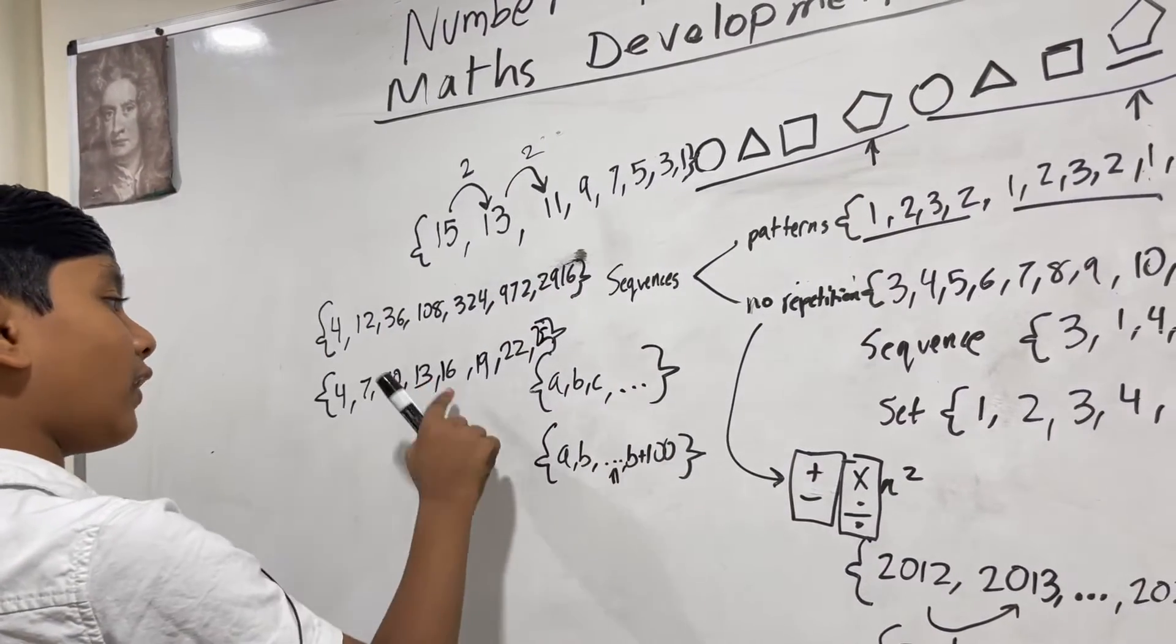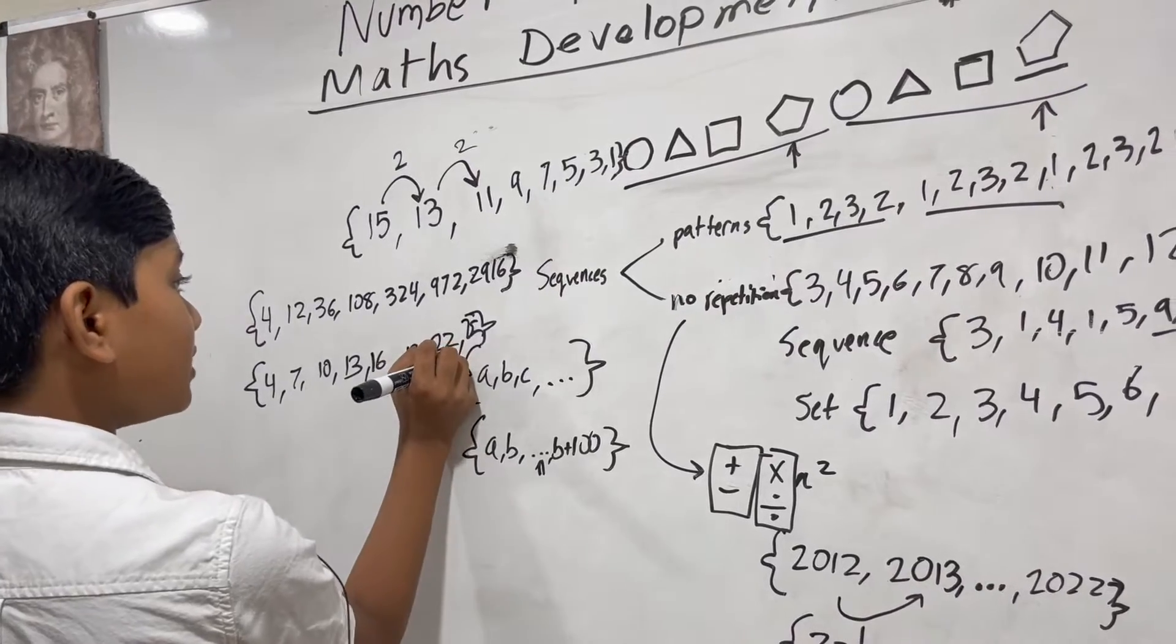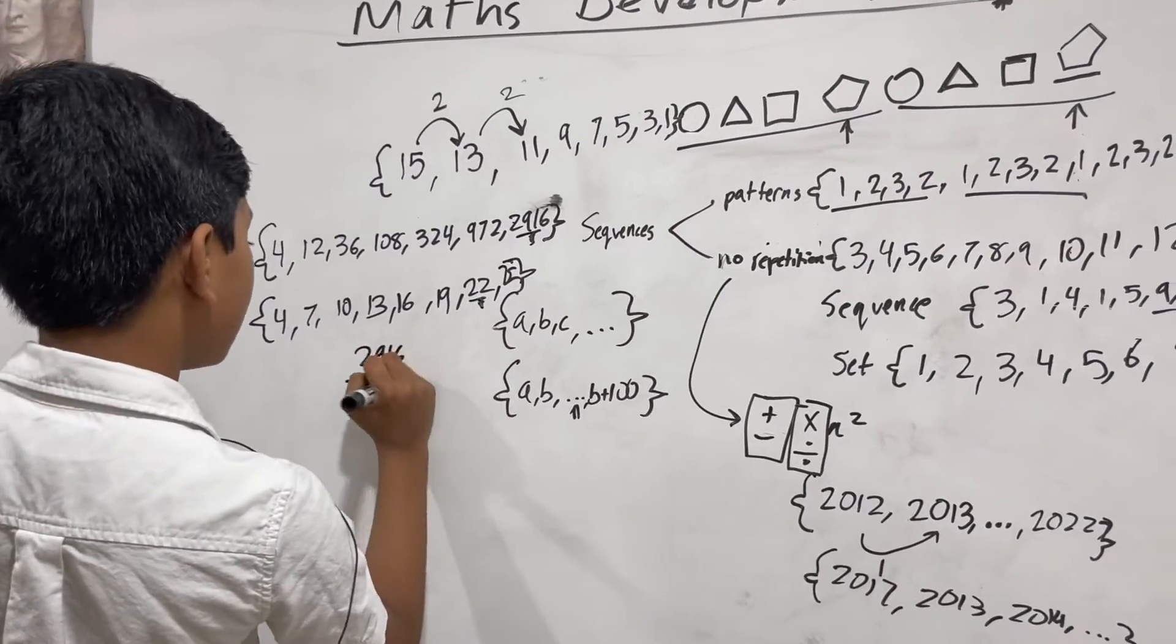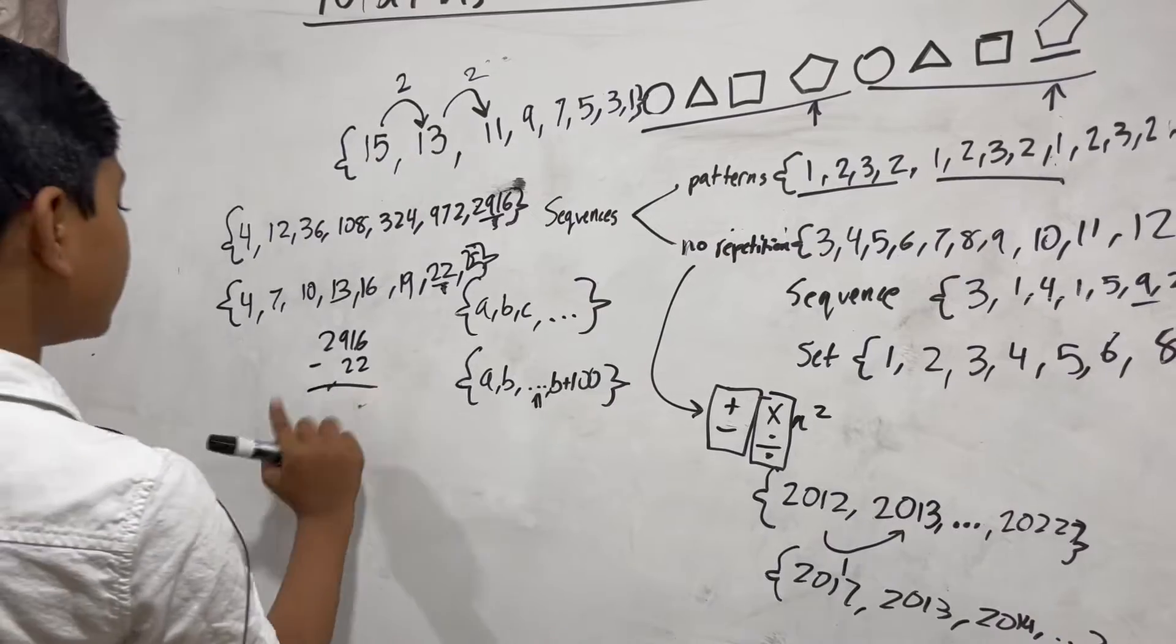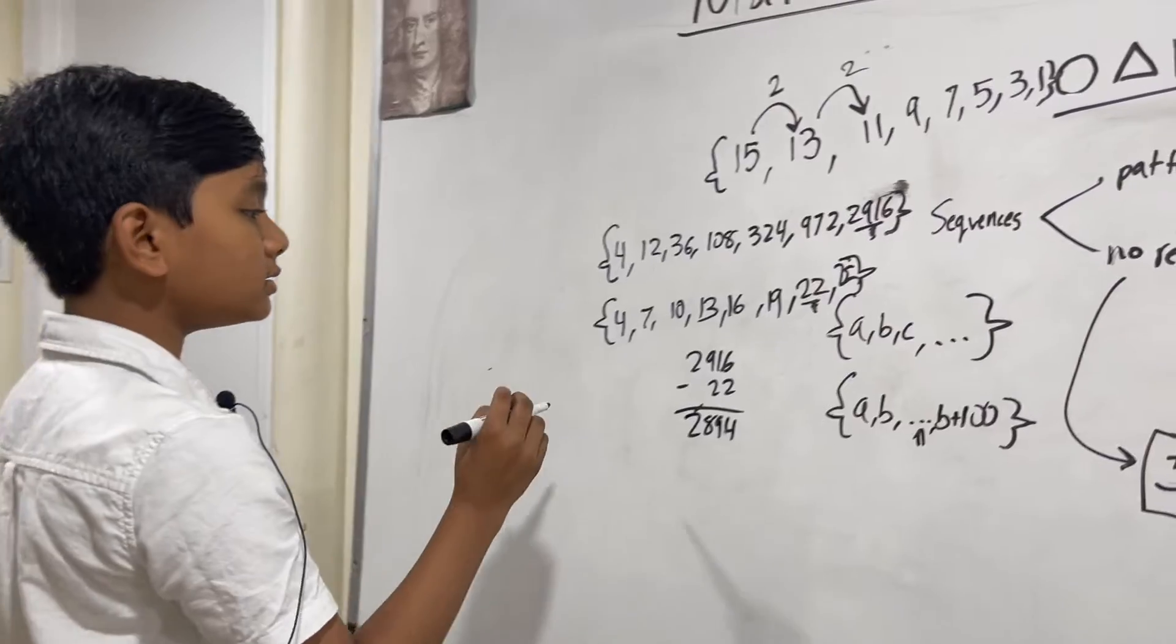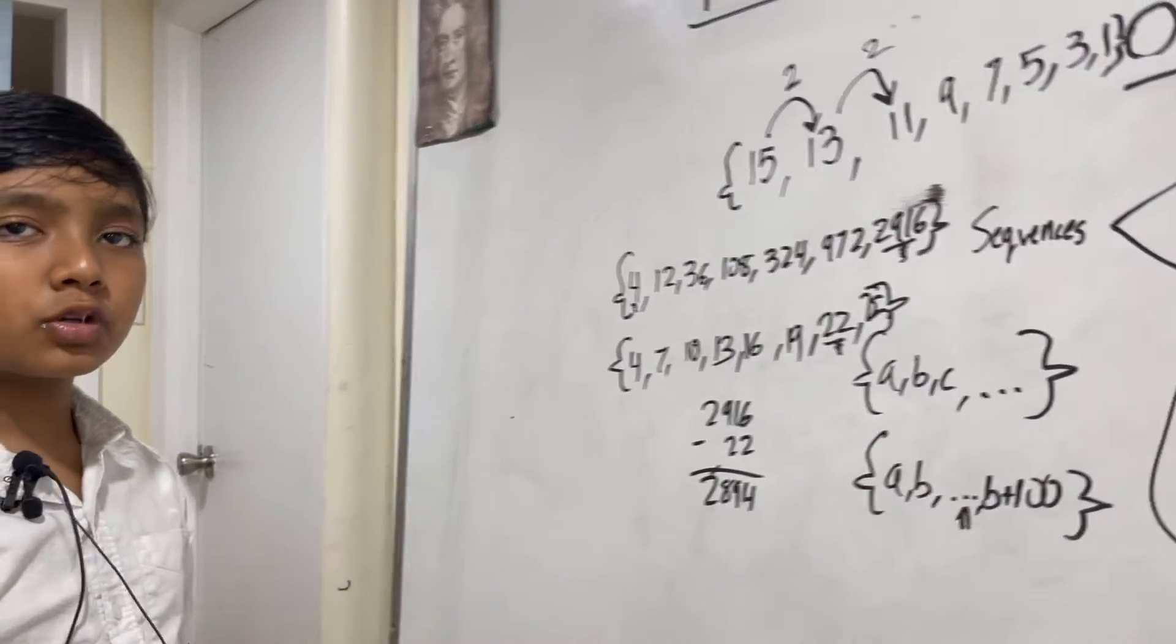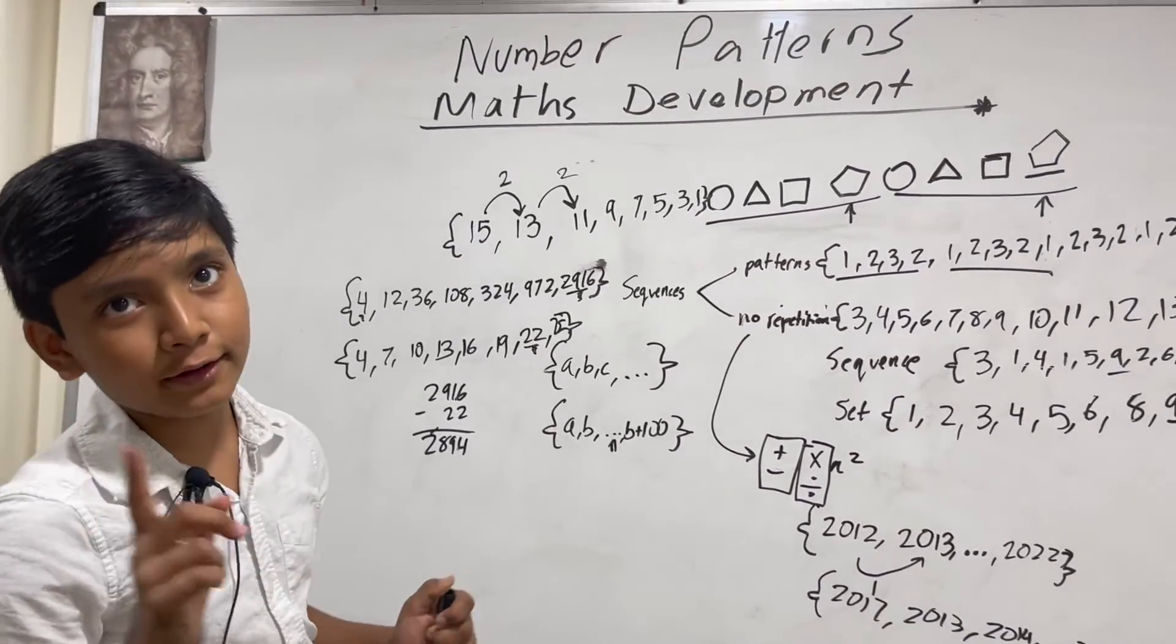So you can clearly see that there's a big difference between the 7th term here and the 7th term here. As you can see, there is a very large difference. Because you're multiplying. So if you multiply, especially by a number that's larger than 1, you get much bigger and stronger things.